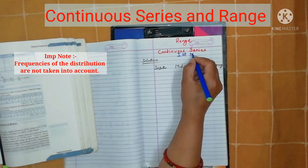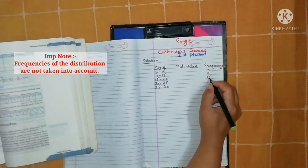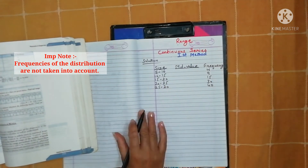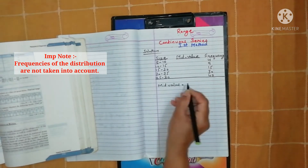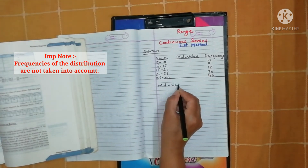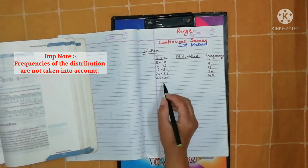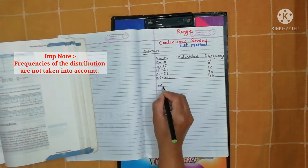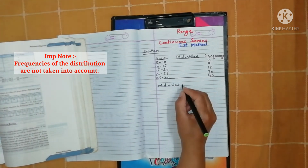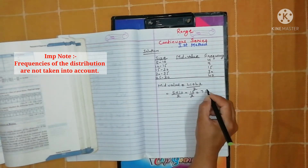First, we write the class intervals: 5 to 10, 10 to 15, 15 to 20. Then we write the next column for mid values, and another column for frequencies. We leave the mid value cells blank and will calculate them next.